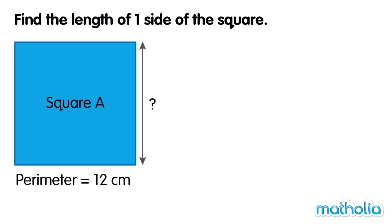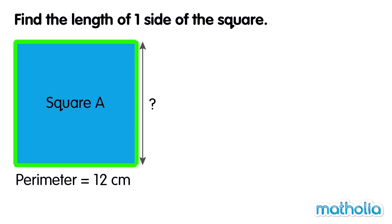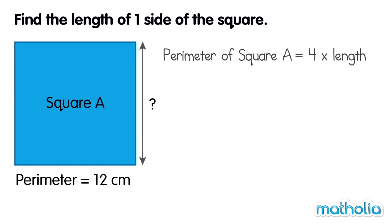Find the length of one side of the square. The perimeter of a square is found by adding the lengths of its sides. In a square, the side lengths are the same. So the perimeter of square A is equal to length plus length plus length plus length, or 4 times the length.